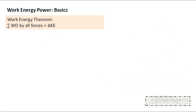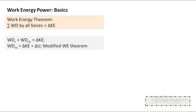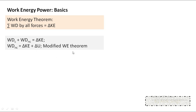Before discussing conservation of mechanical energy, we revisit the work-energy theorem: the sum of work done by all forces equals the change in kinetic energy. Now that we've categorized forces into conservative and non-conservative, we split the work done: work by conservative forces plus work by non-conservative forces equals change in kinetic energy. Since work done by conservative forces equals −ΔU, rearranging gives: work done by non-conservative forces equals change in kinetic energy plus change in potential energy. This is the modified work-energy theorem.